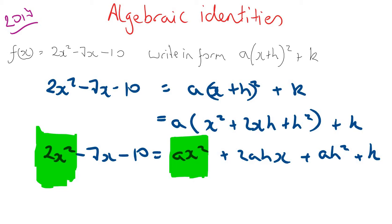So 2x squared has to be equal to ax squared or else it won't be true. Minus 7x has to be equal to 2ahx, i.e. the coefficient of x on the left has to equal the coefficient of x on the right, that's minus 7 equals 2ah. And minus 10 has to be equal to ah squared plus k.